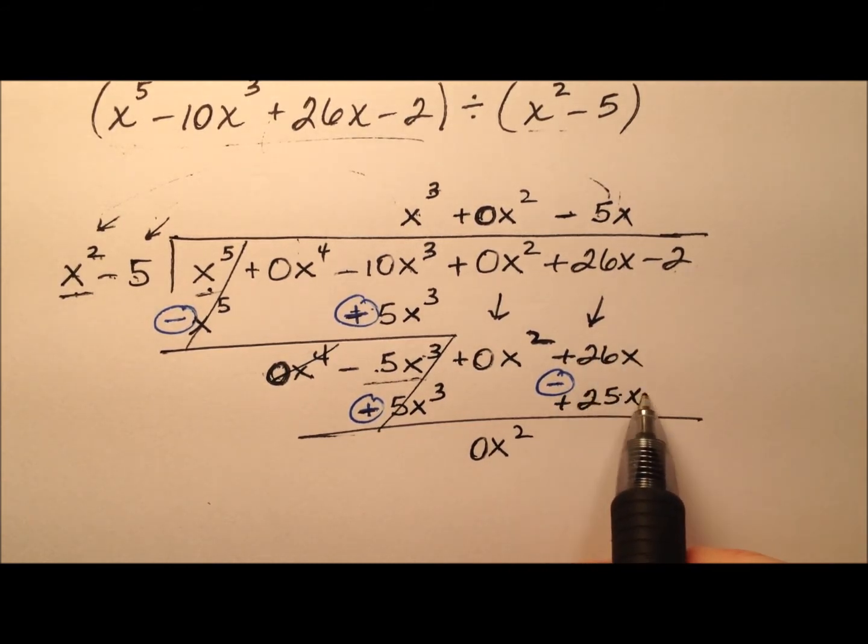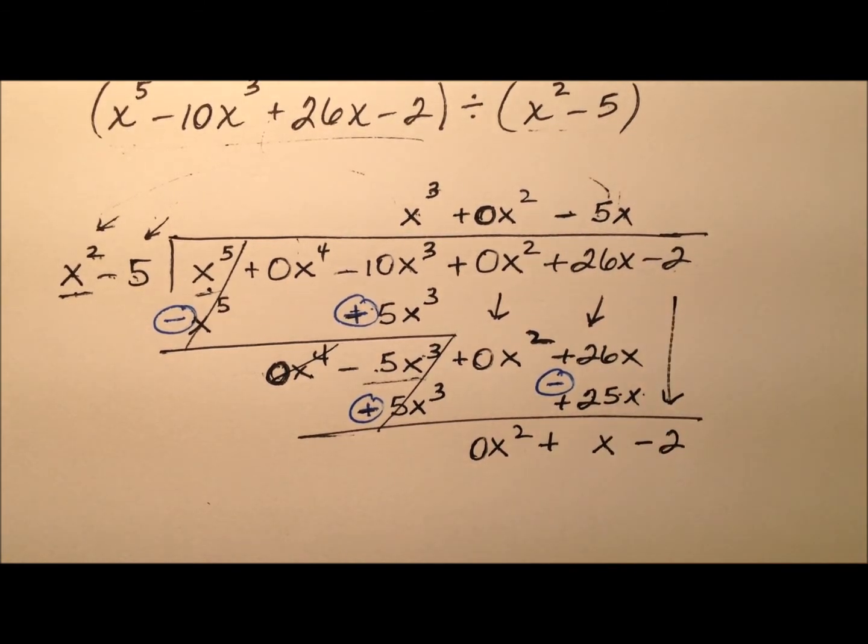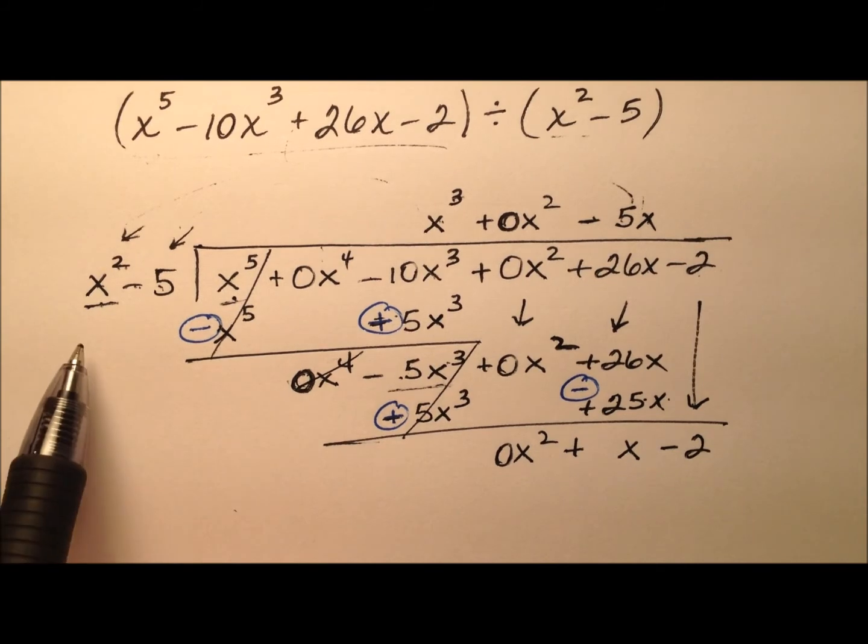So these cancel, this 0x squared just kind of comes down, and then we have positive 26x minus 25x will be just x and then minus 2.